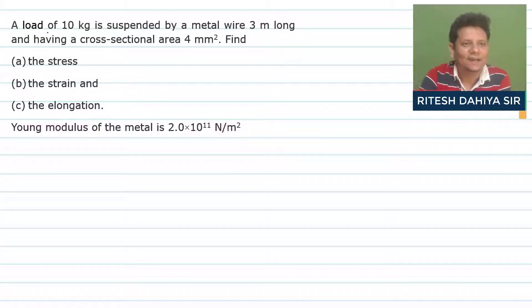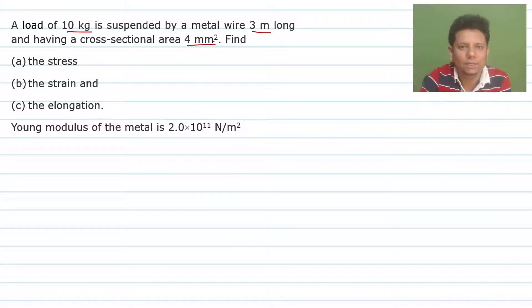Now, the question says a load of 10 kg is suspended by a metal wire 3 m long and having a cross-sectional area 4 mm square. Find how much stress, strain, and elongation.